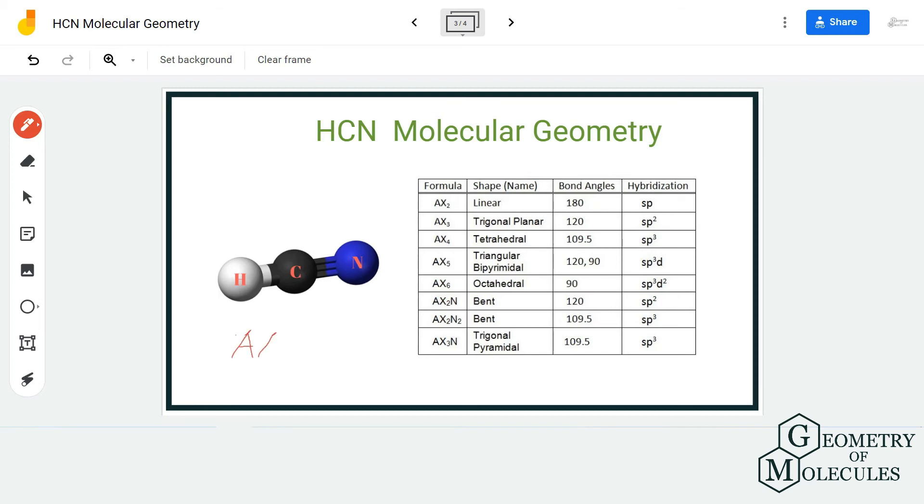Hence, the AXN notation for HCN molecule is AX2. If you refer to this table, it says that molecules that have AX2 formula are linear in shape. Hence, the molecular geometry of HCN molecule is linear.